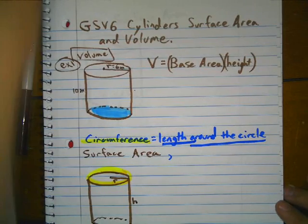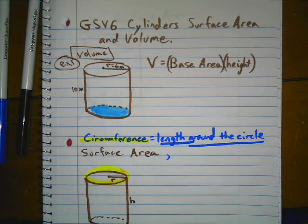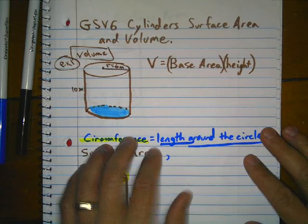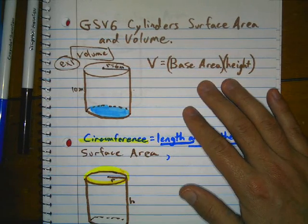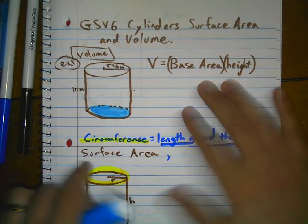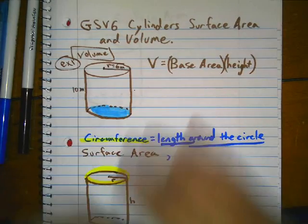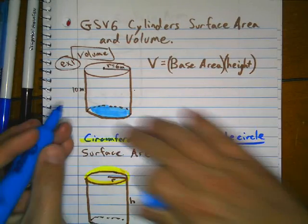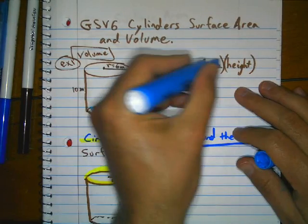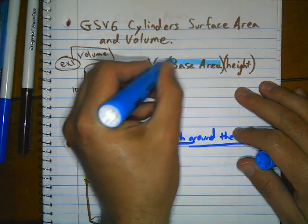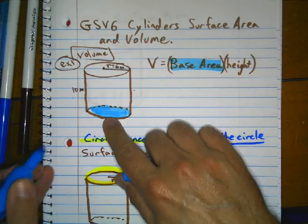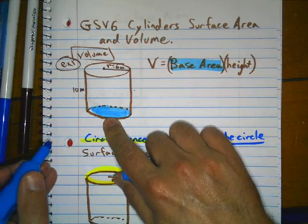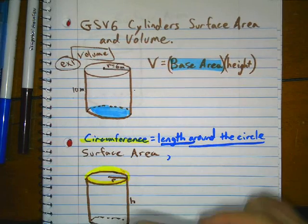We're going to talk about surface area and volume of cylinders. In our previous lesson, we talked about finding volume, which is simply getting the base area — the area of the circle — and multiplying by the height.